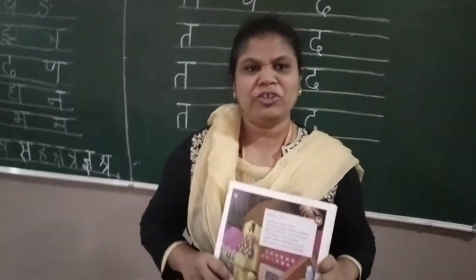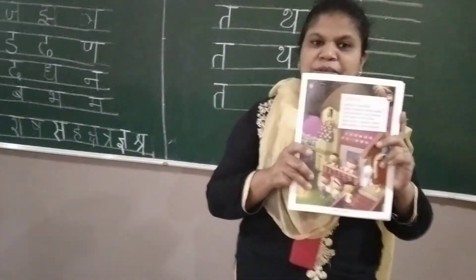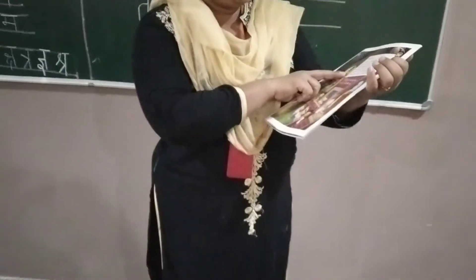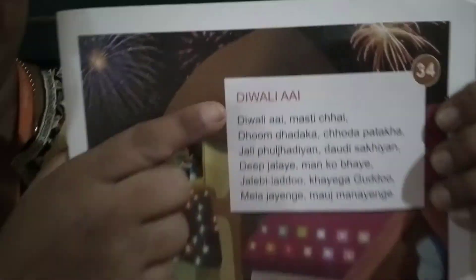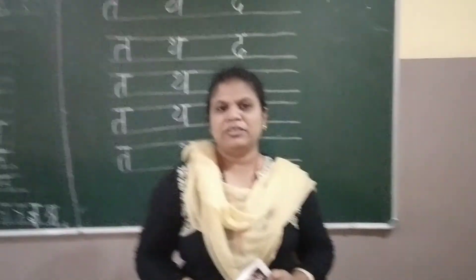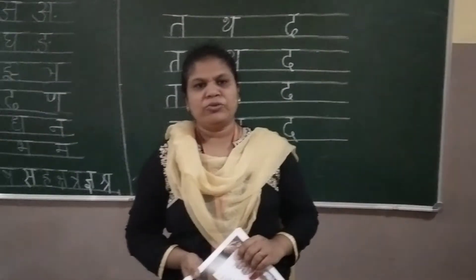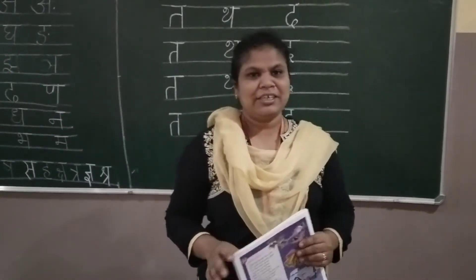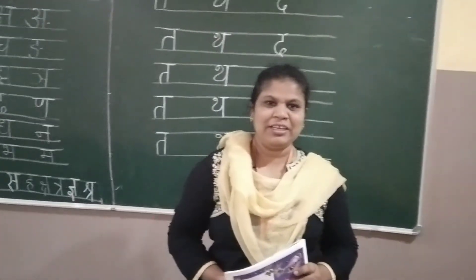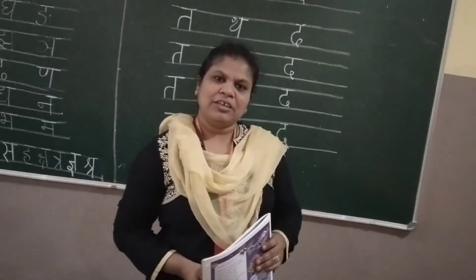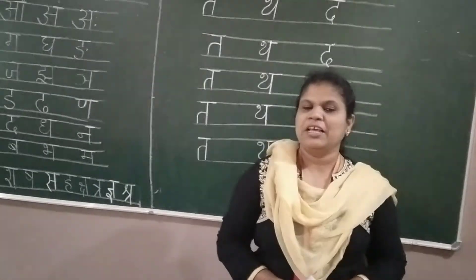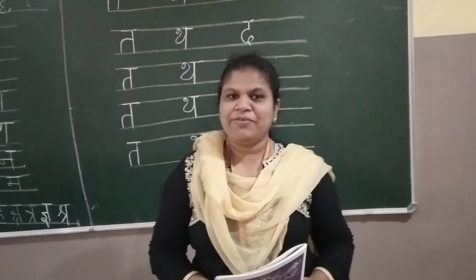Now I am going to teach you an oral rhyme. Children, you can find this rhyme in your English rhyme book — rhyme number thirty-four. The day before yesterday this month you celebrated a festival — yes, it is Diwali! What do you do on Diwali? You burst crackers, flower pots. Everyone likes to burn crackers, so this rhyme is based on Diwali.